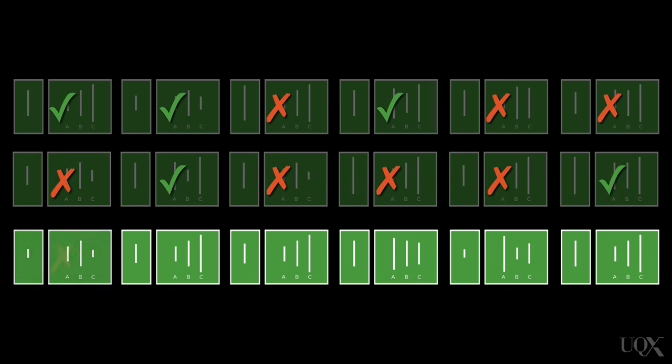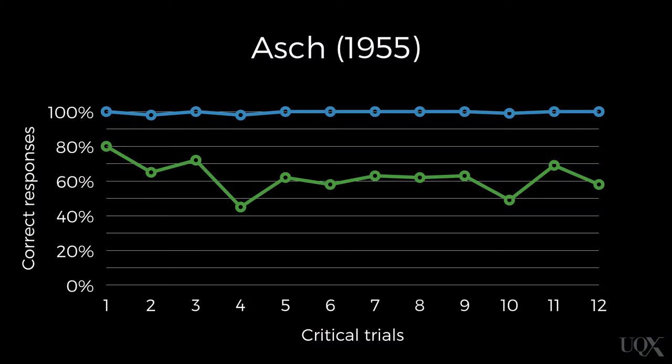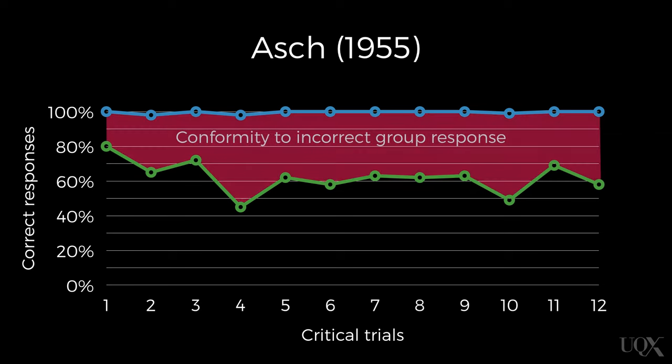The real participant was seated so that they heard everyone else's answers before giving their own. So what happened when participants were faced with the rest of the group giving the incorrect answer? Did they go along with the group or point out the correct answer? In this figure, the green line shows those tested in a group. This gap between the blue and the green lines is our measure of conformity — it shows the increase in giving the incorrect response that the group suggested.